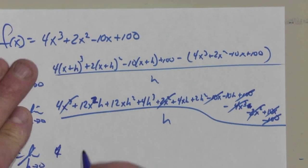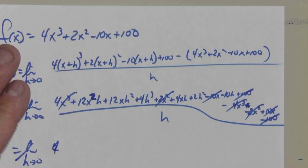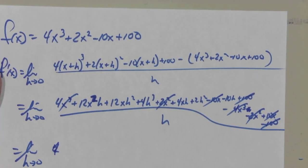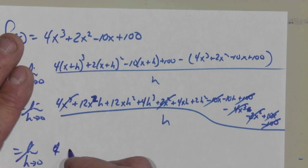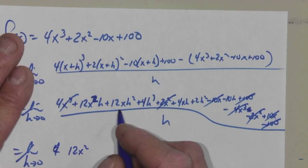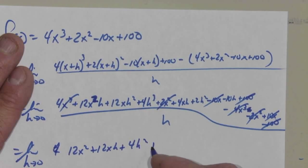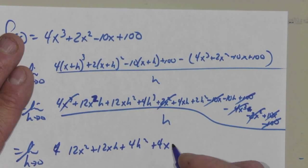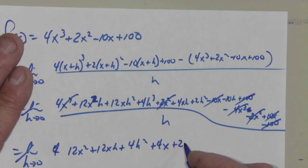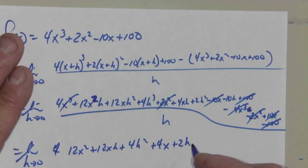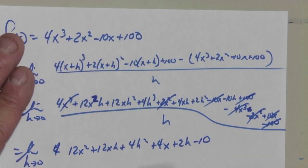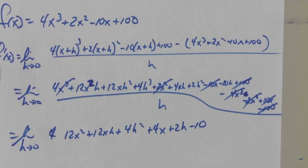So now I'm going to divide by h as I go also. I'm doing a lot in one step here. 12x squared h, excuse me, 12x squared plus 12xh plus 4h squared plus 4x, 8x plus 2h minus 10. Okay. I think that's it, isn't it?